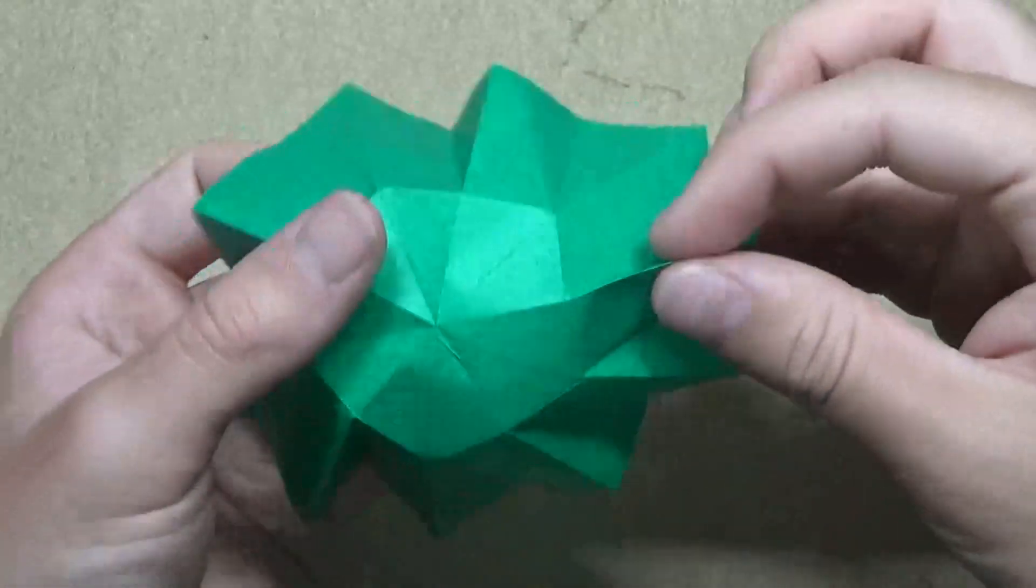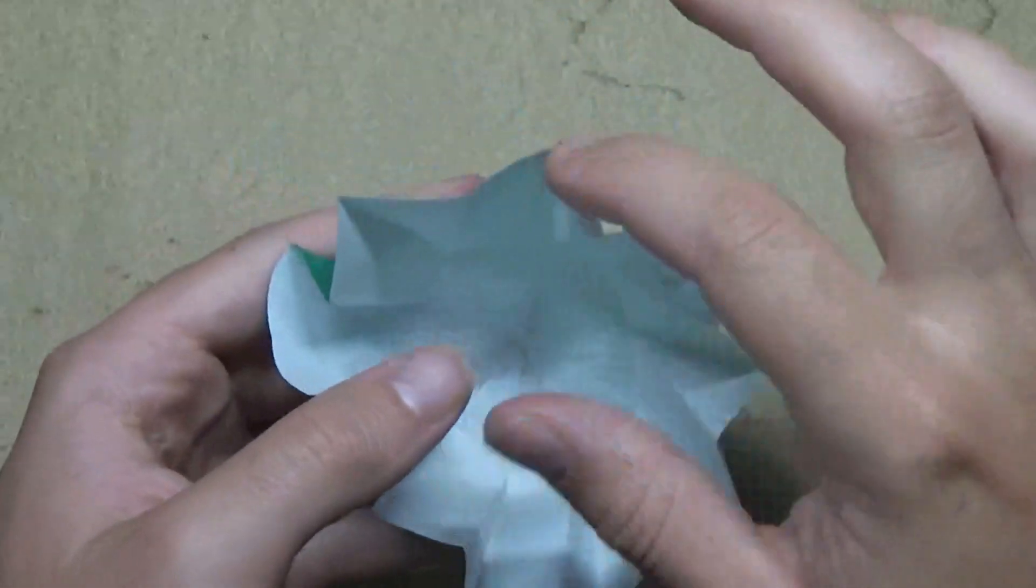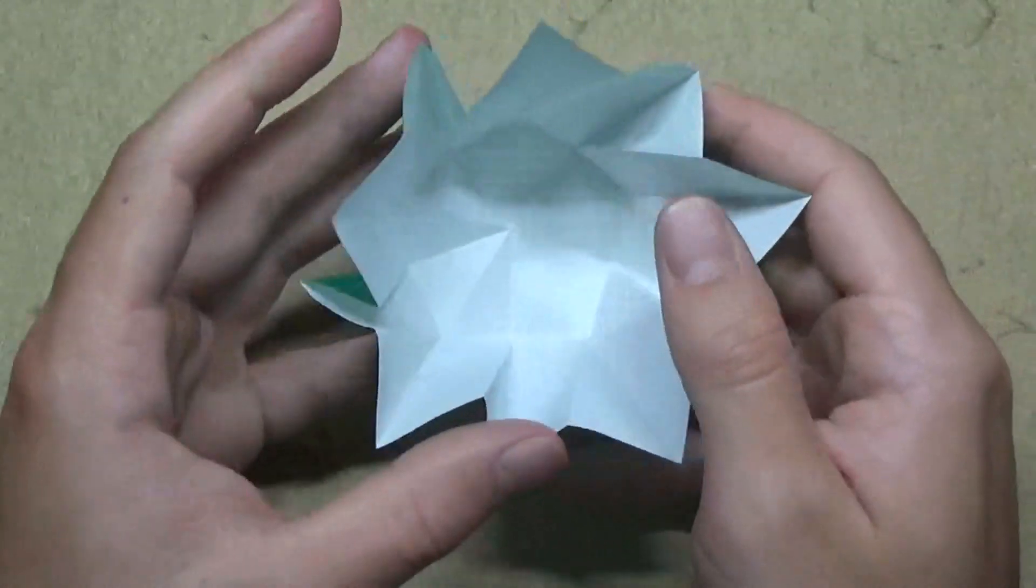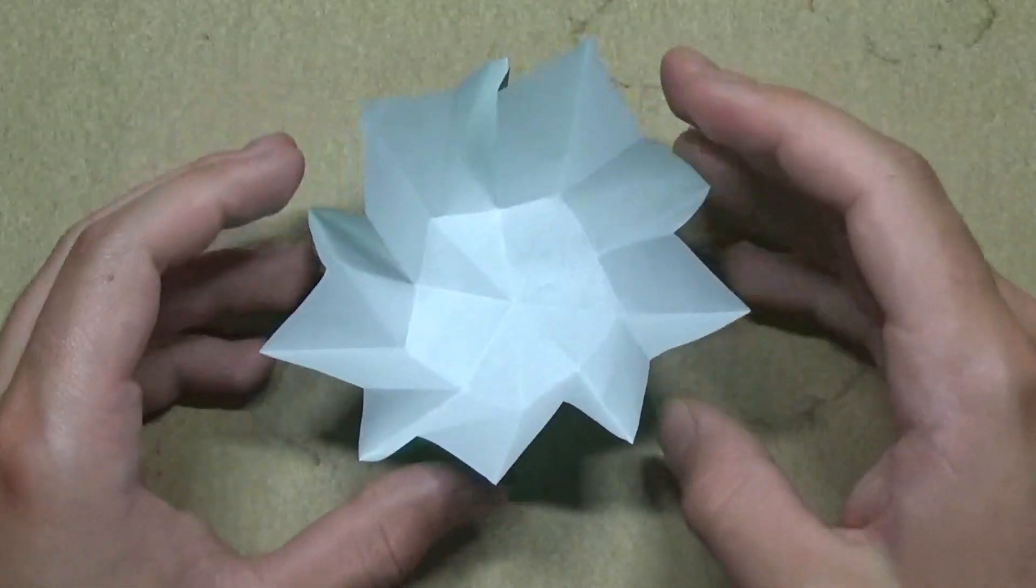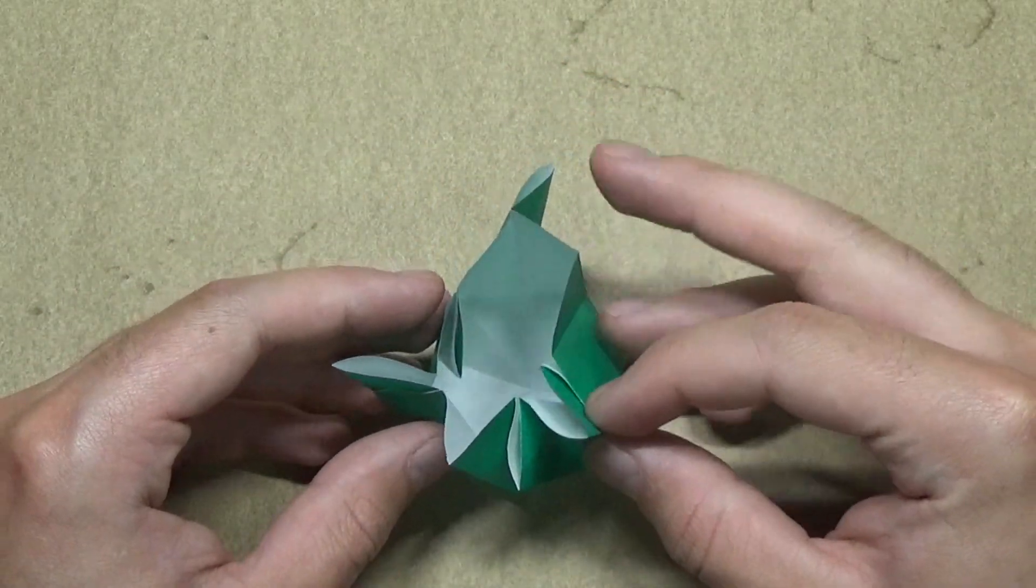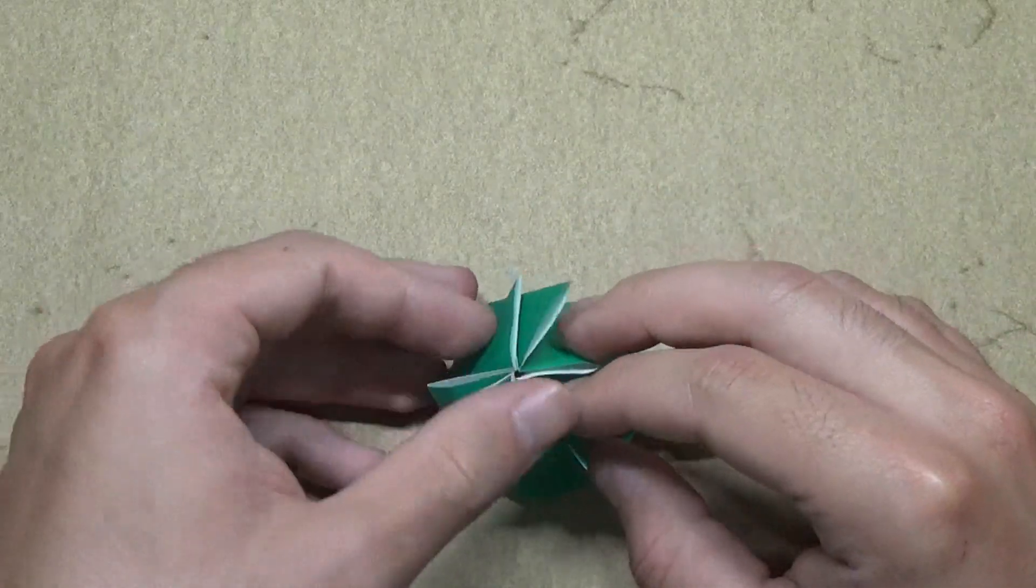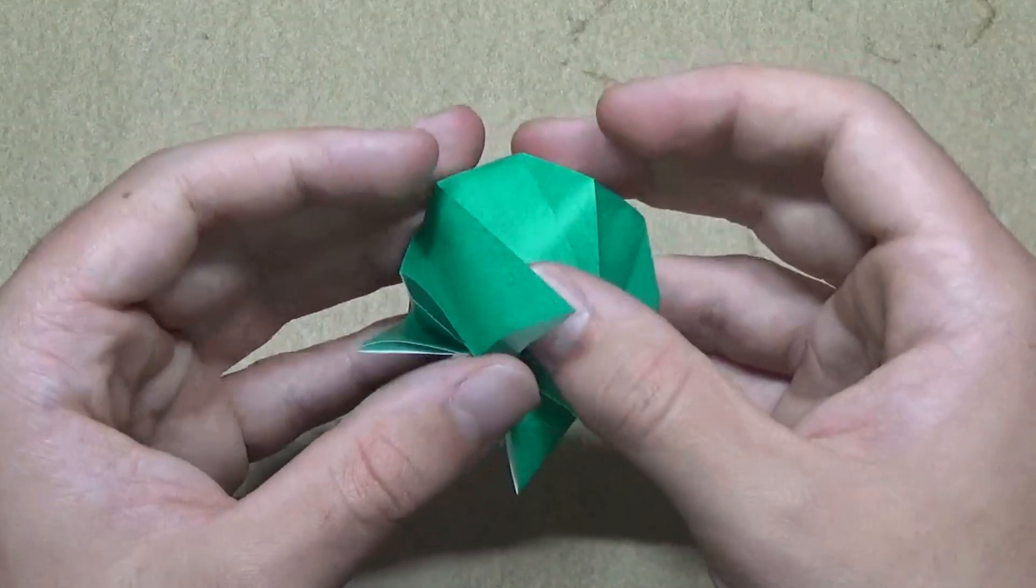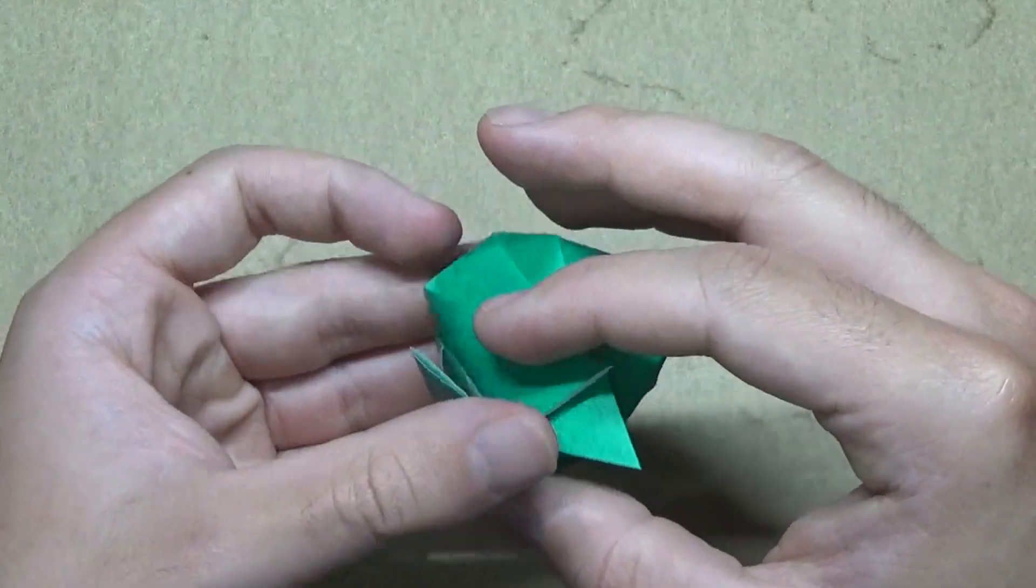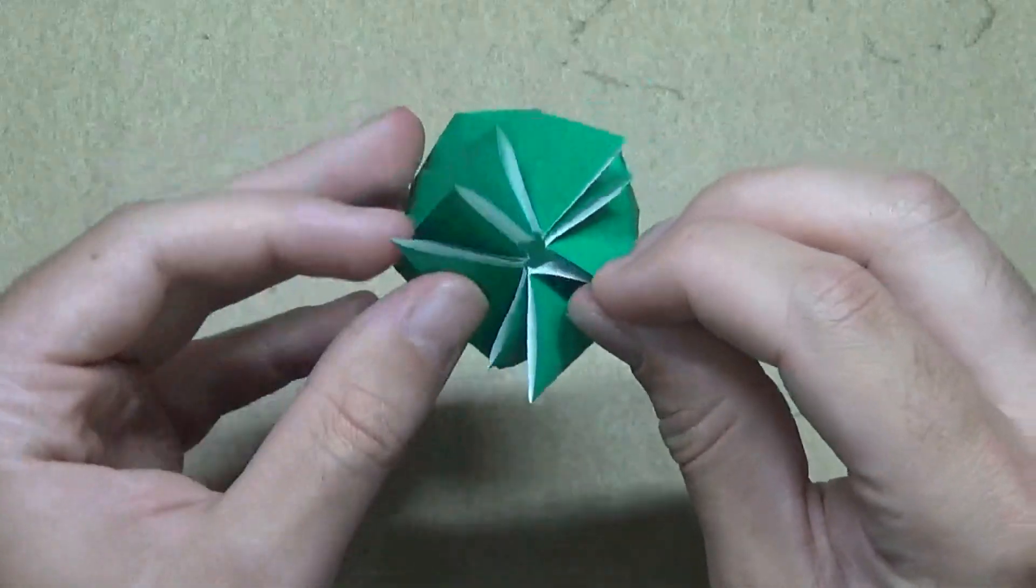Alright, and now once you got all the creases done, now we're ready to collapse it. So make sure that all the creases are formed. And now what you want to do is just kind of hold it like this and just take your fingers and just bring everything in. And it should pretty much happen on its own like that. I hope that wasn't too confusing. But yeah, it just pretty much will happen on its own. So just make all those creases at the same time. And you'll get something like this and here's the container.